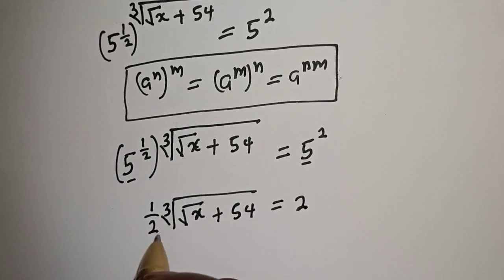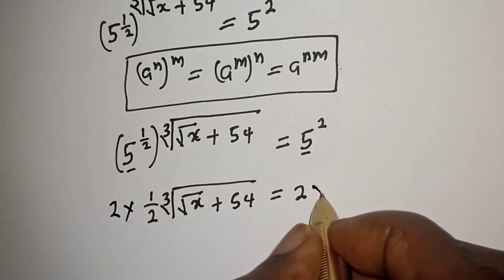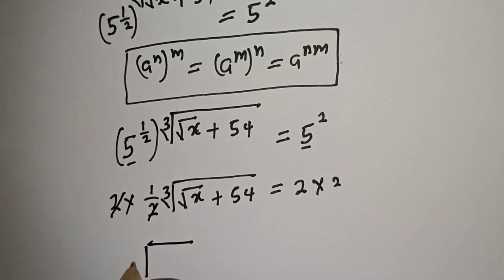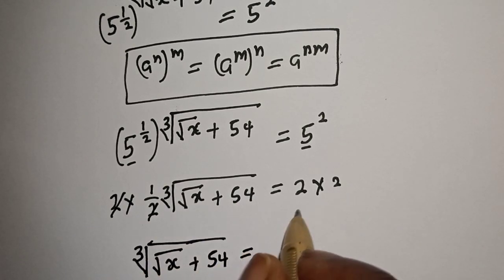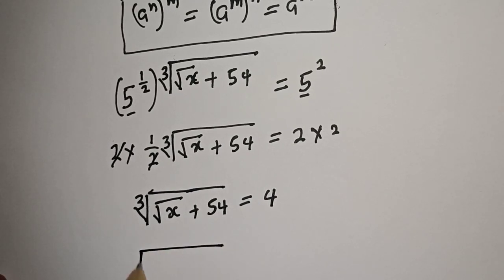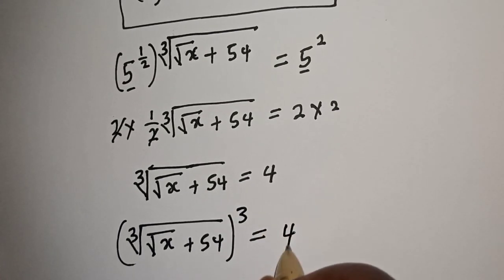Let's multiply both sides by 2. Multiplying by 2 cancels the one over two, and we are left with cube root of square root of s plus 54 is equal to 2 times 2, which is 4. Now let's raise both sides to the power of 3: cube root of square root of s plus 54, cubed, is equal to 4 raised to power 3.